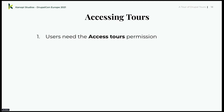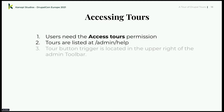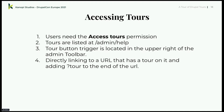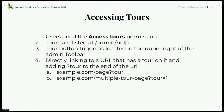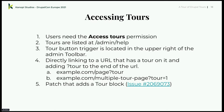How do we access tours? First, the user needs the 'access tours' permission. If you assign this to any role — including anonymous — they can see the tours. Tours are listed at admin/help. There is a tour button triggered in the upper right of the admin toolbar. You can also directly link to a URL that has a tour on it and add '?tour' to the end of the URL, and the tour will start. There is also a patch that adds a tour block, so for people who can't access the admin toolbar, you can use this block in your design to call out the tour.